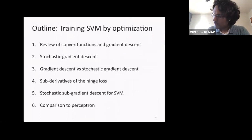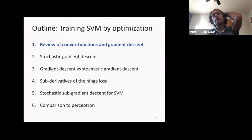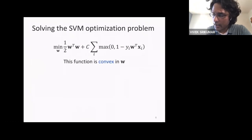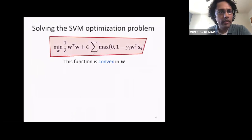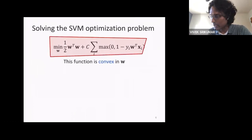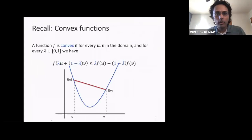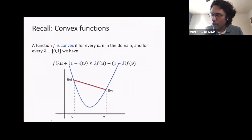Let's step into learning by optimization by talking about convex functions. The reason we're talking about convex functions is that the SVM objective function is convex in W. A function is convex if for every U and V in the domain, and for any lambda between 0 and 1, we have: F(lambda·U + (1-lambda)·V) ≤ lambda·F(U) + (1-lambda)·F(V).